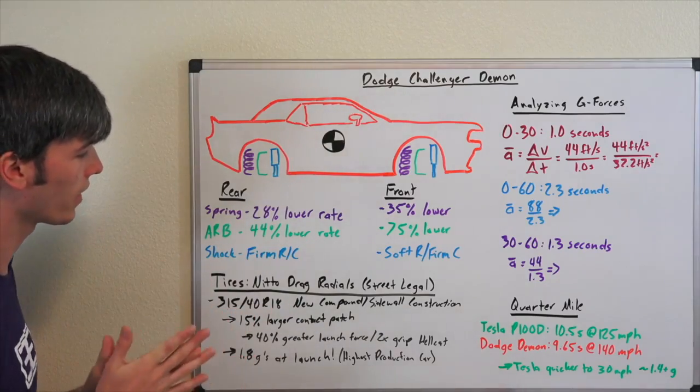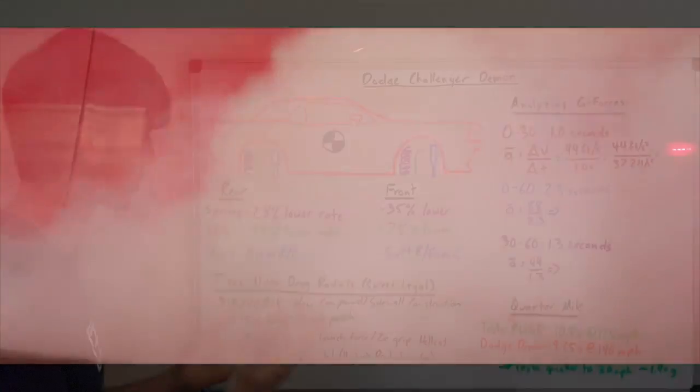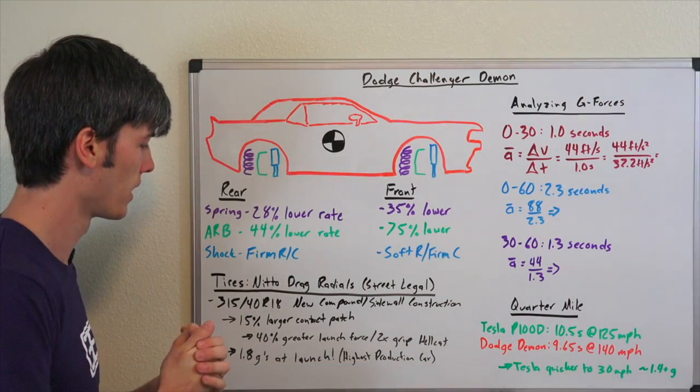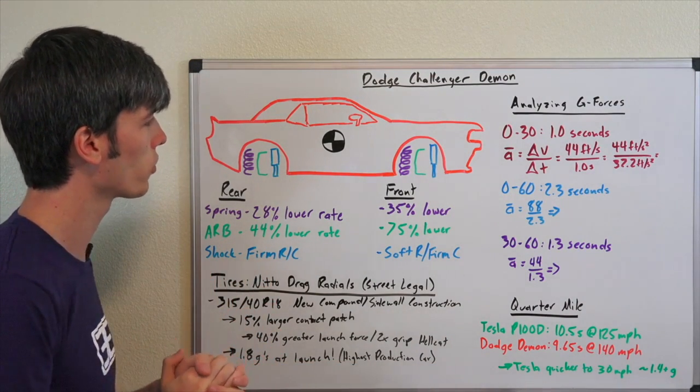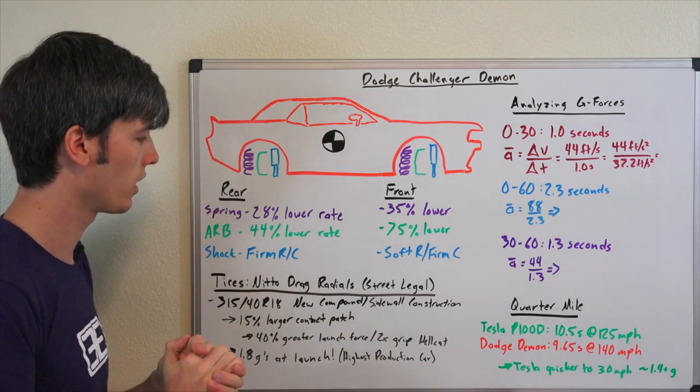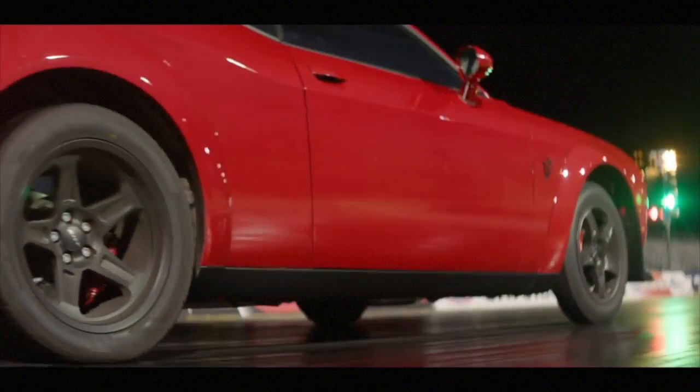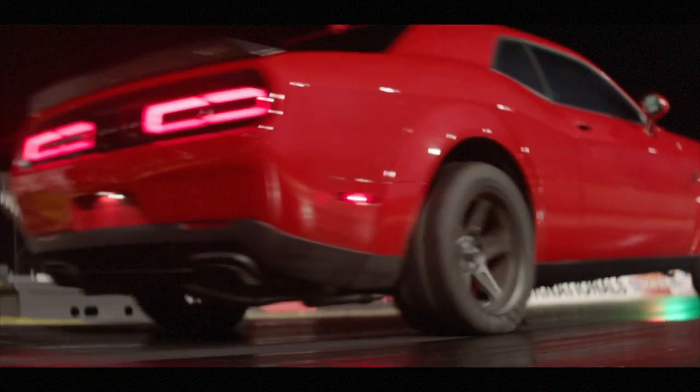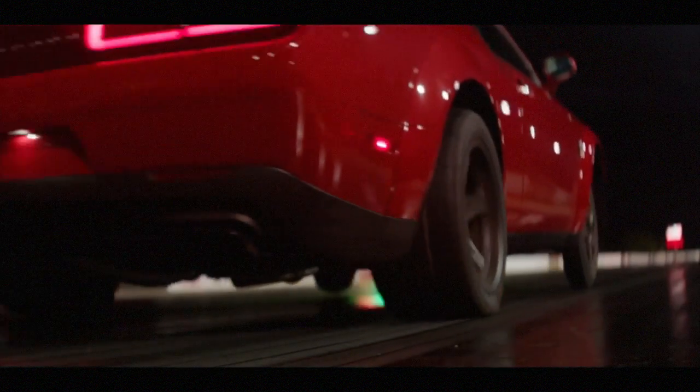As far as the tires, these are street legal Nitto drag radials, which is kind of crazy. This is a production first for a production vehicle to have drag radials. They're 315s over 40, the compound and sidewall construction completely unique to this vehicle. Super cool. You can see the tire twisting as it's launching like you see in NHRA top fuel cars if you ever see the slow-mo videos of their tires.